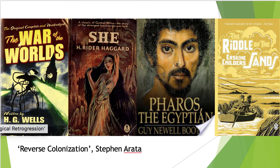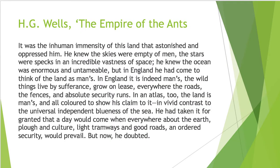As Wells writes in The Empire of the Ants, which we read this week: 'It was the inhuman immensity of this land that astonished and oppressed him. He knew the skies were empty of men, the stars were specks in an incredible vastness of space. He knew the ocean was enormous and untamable, but in England he had come to think of the land as man's. In England it is indeed man's. The wild things live by sufferance, grow on lease. Everywhere the roads, the fences and absolute security runs. In an atlas too, the land is man's and all colour to show his claim to it, in vivid contrast to the universal independent blueness of the sea. He had taken it for granted that a day would come when everywhere about the earth, plough and culture, light tramways and good roads and ordered security would prevail. But now he doubted.'